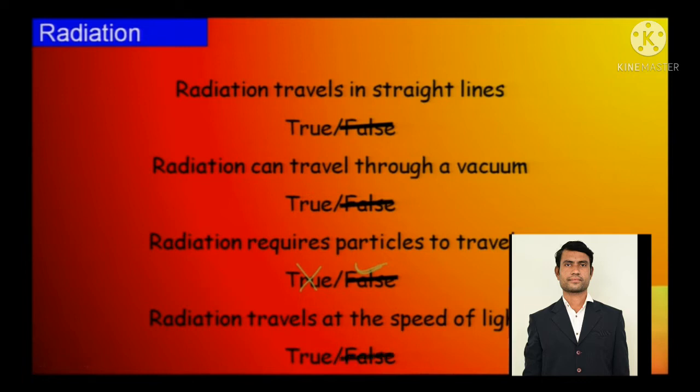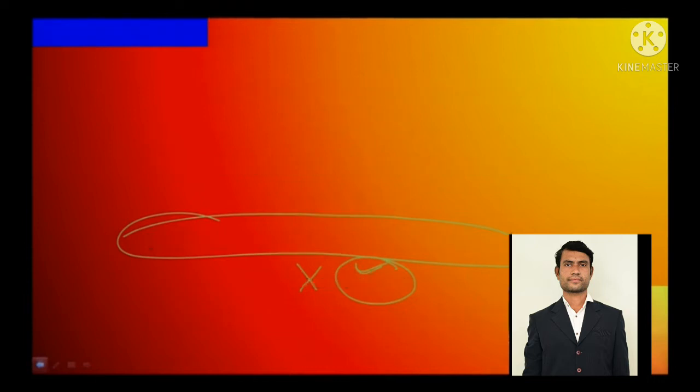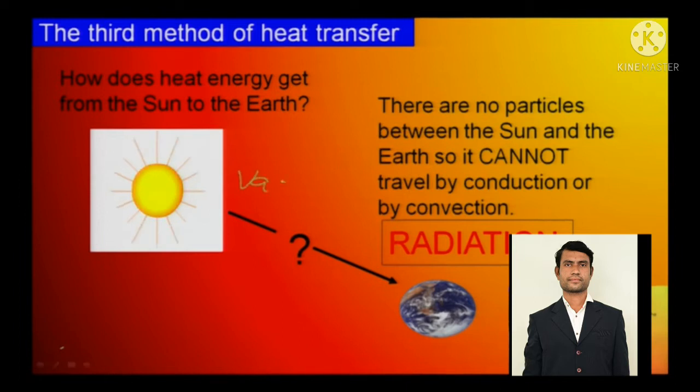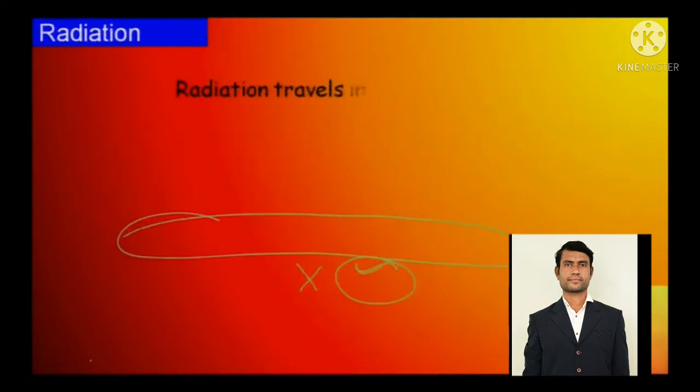Radiation requires particles to travel. No, it does not require any particles to travel, so false is the correct answer. Otherwise it would not have come from sun towards earth. There is no particle there, as you can see in the previous slide.